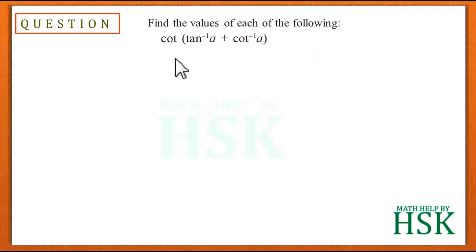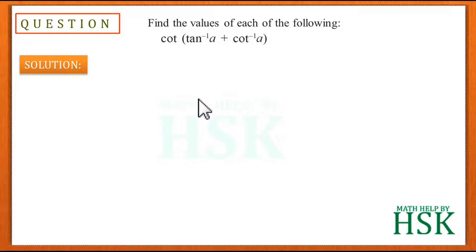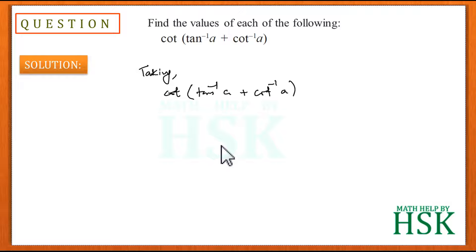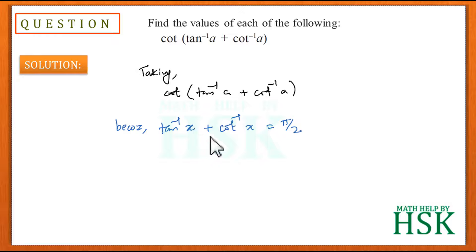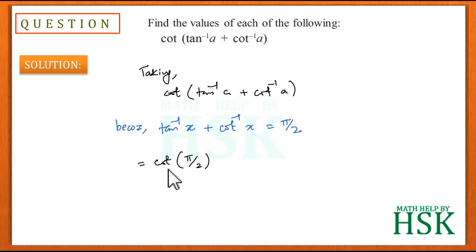Taking question number 12 of exercise 2.2 of Inverse Trigonometric Functions: find the value of cot(tan⁻¹(a) + cot⁻¹(a)). This is very easy because we know the result tan⁻¹(x) + cot⁻¹(x) = π/2. So tan⁻¹(a) + cot⁻¹(a) = π/2, giving us cot(π/2) = 0, which is the required answer.